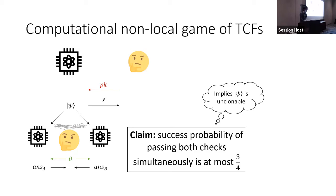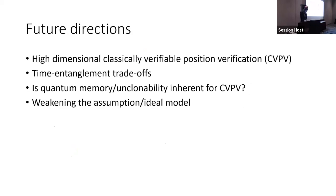To conclude, I'll mention future directions. Our protocol relies on unclonability to prove security, which has an undesirable consequence: the honest prover must maintain a coherent quantum memory for a short period of time. An open question is whether this is inherent — can we remove this requirement?